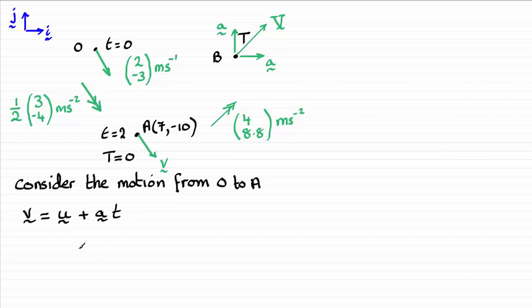Because we know U, U is 2 minus 3, so we've got 2 minus 3 here. And we've got the acceleration, which I'm going to keep as a half of 3 minus 4. But you might have it in as 1.5 and minus 2, OK? So, that's what I've got there, times the time T, which is this time here of 2 seconds. If you work that out, you'll find you get 5 minus 7, OK?